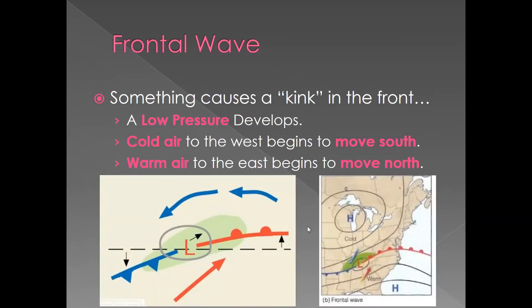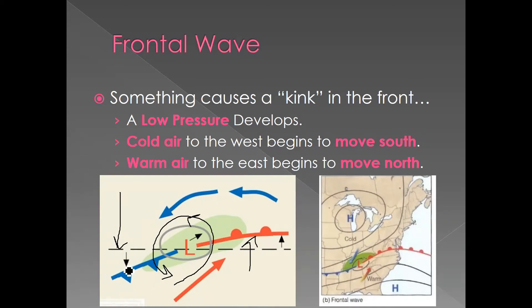Then the kink happens. Once the kink happens, warm air begins to push to the north, cold air begins to push to the south, and cyclonic motion begins to develop. Remember, cyclonic motion is counterclockwise in the northern hemisphere and clockwise in the southern hemisphere. Regardless of hemisphere, warm air begins to move towards the pole and cold air begins to move towards the equator. As warm air advances, it pushes cold air out of the way — the warm air rides up and over the cold air, cools and condenses, and we get precipitation.